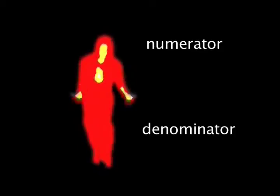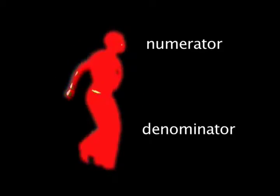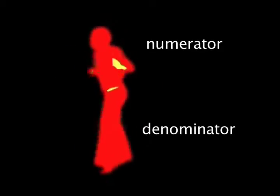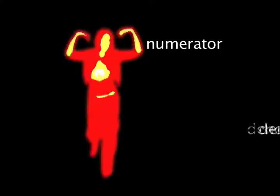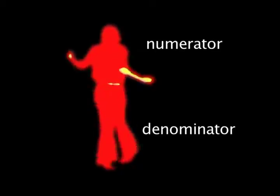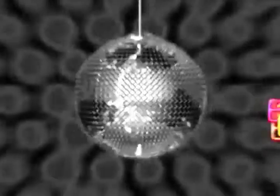Reach high for the numerator, low for the denominator, turn around and take it on down. Break it down, take it down, break it down, take it down, break it down, yeah. Reach high for the numerator, low for the denominator, turn around and break it down.